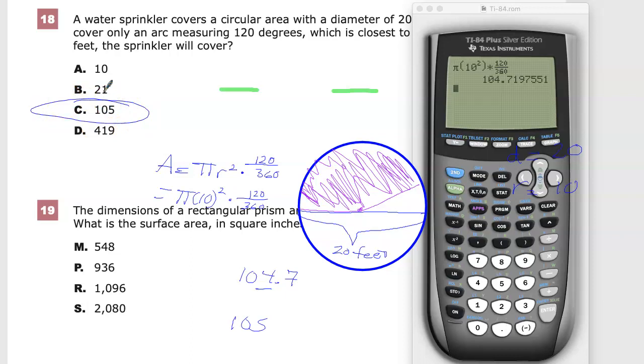So any situation in which you have a sector, find the area of the larger circle, and then just multiply it by, in a sense, a percentage, or just create a ratio of however many degrees that you're given divided by how many degrees in a circle, which is, of course, 360. And for some reason, they gave it to you in radians, you just do two pi, and then that should get you to your final answer.